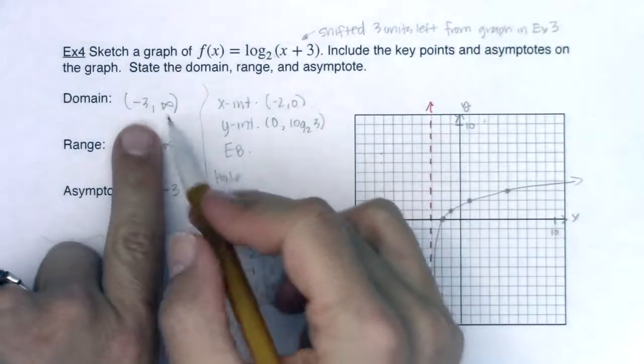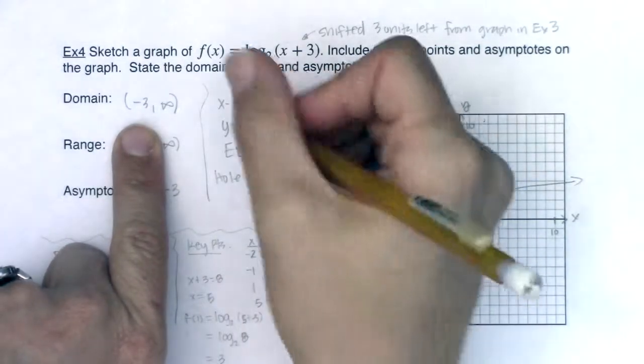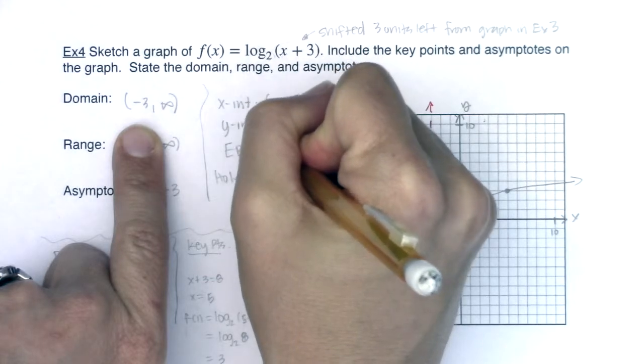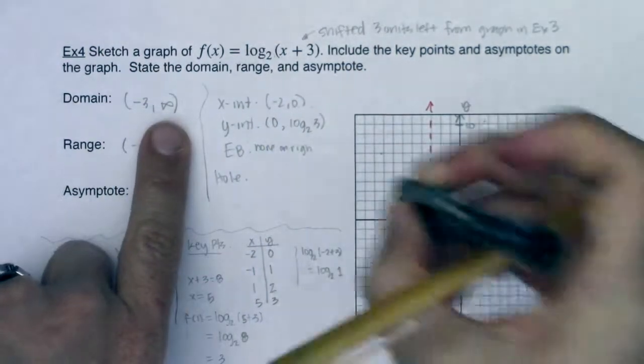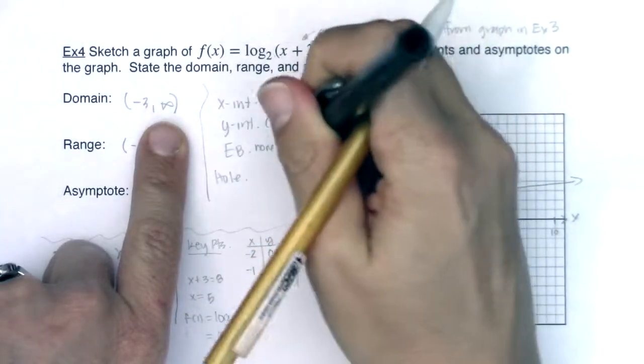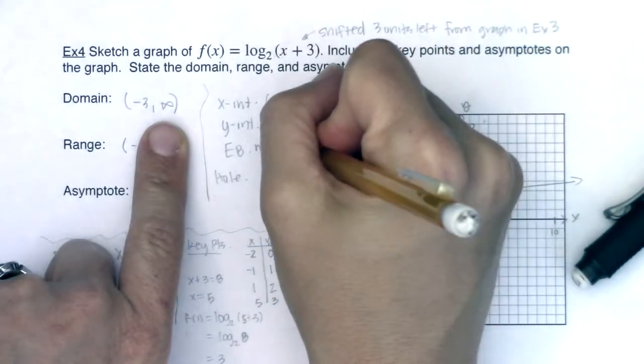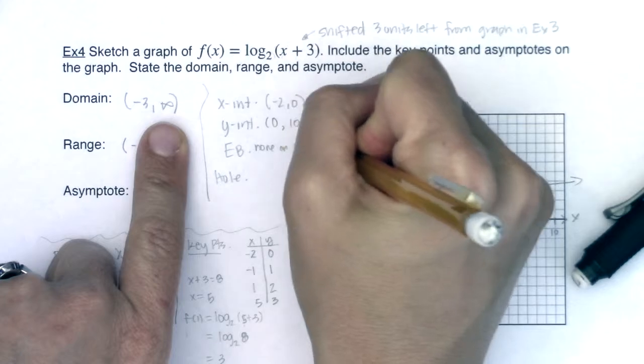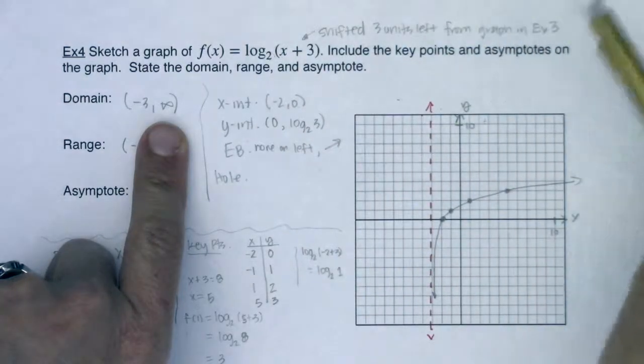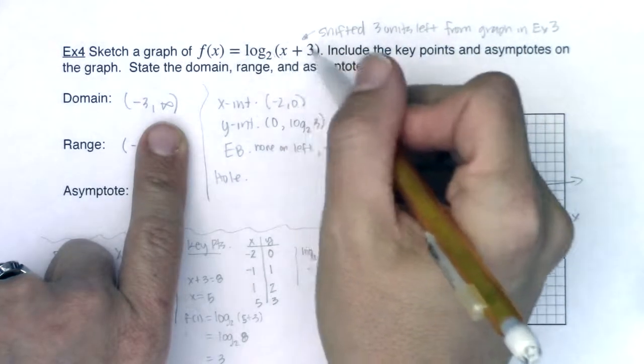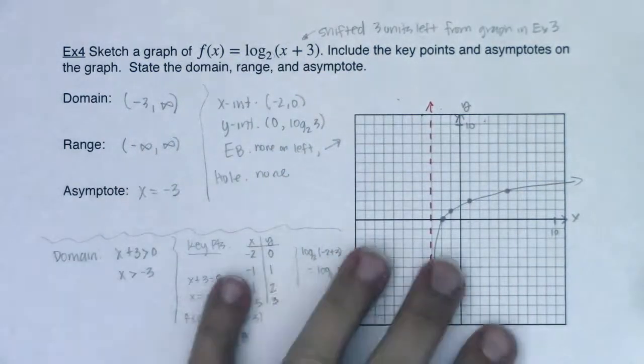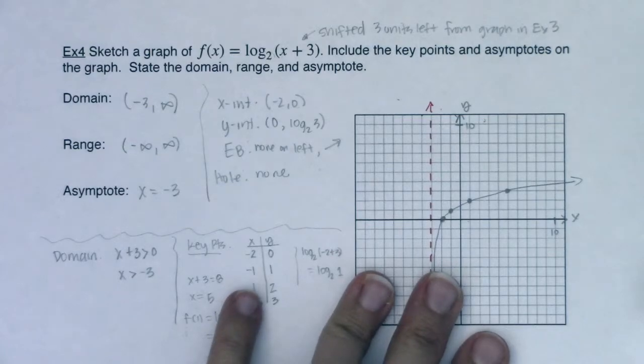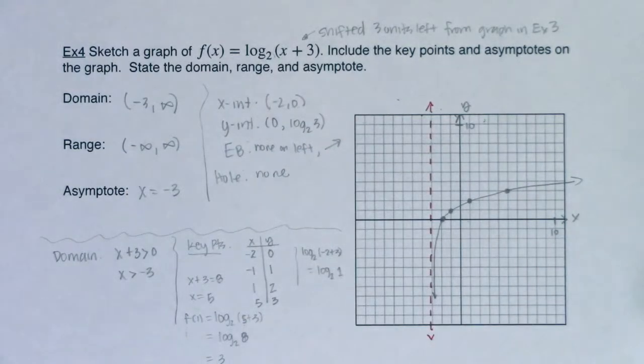For my end behavior, I don't have a negative infinity in my domain, so there is no end behavior on the left. And then I have my right arrow up. If I look at my argument here, it is not a fraction, so I have no holes here. And that's your basic log base 2 of x graph, but shifted 3 units left.